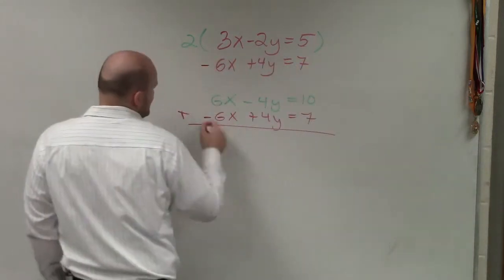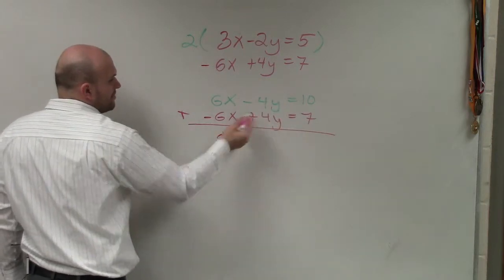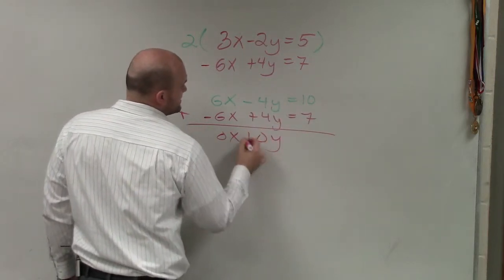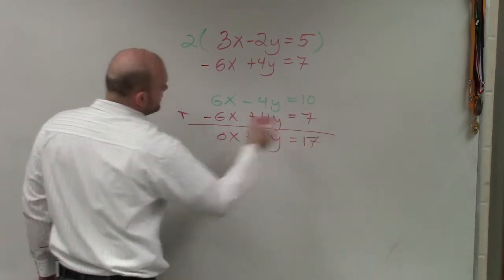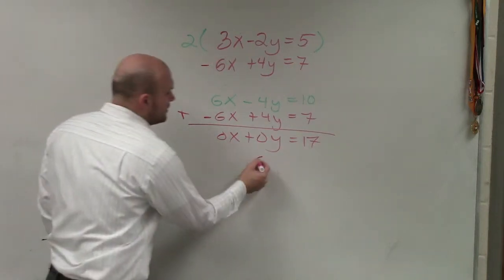Now, let's go ahead and add them. 6x plus negative 6x is 0x. Negative 4y plus positive 4y is 0y equals 17. 0x plus 0y is 0 equals 17.